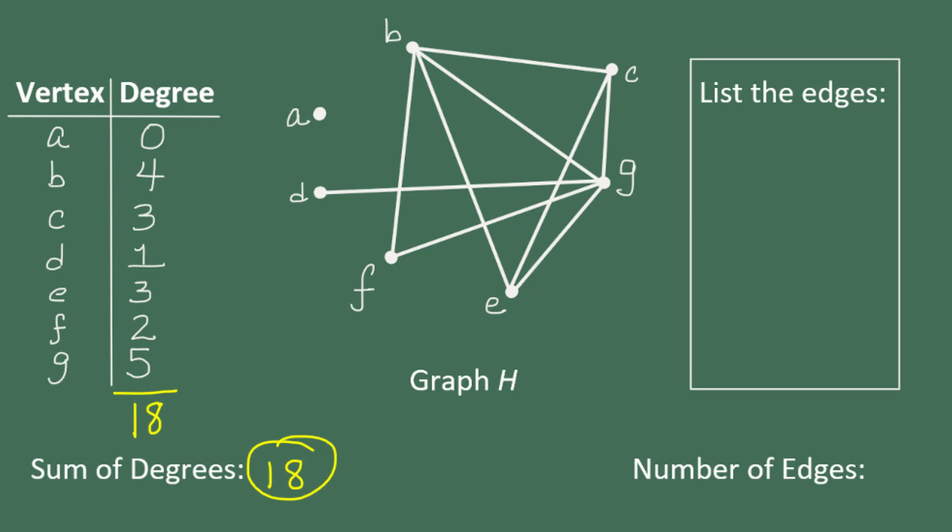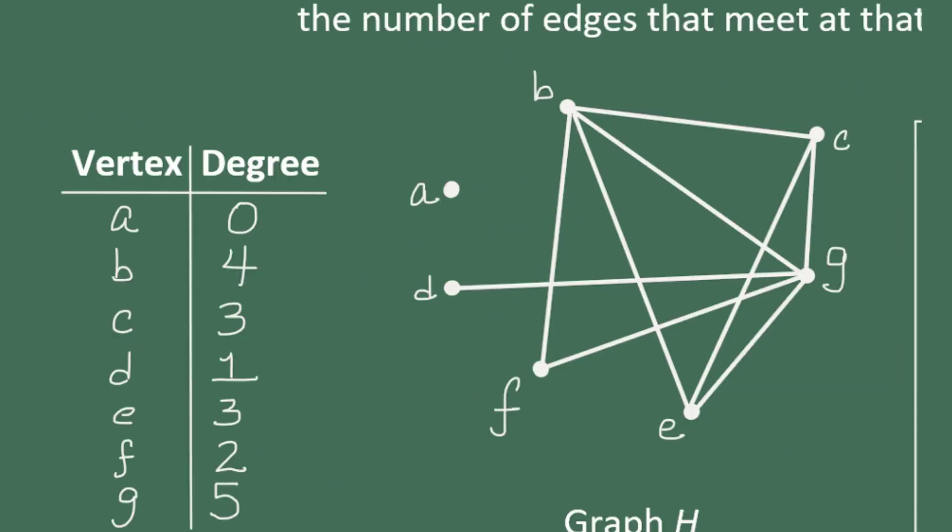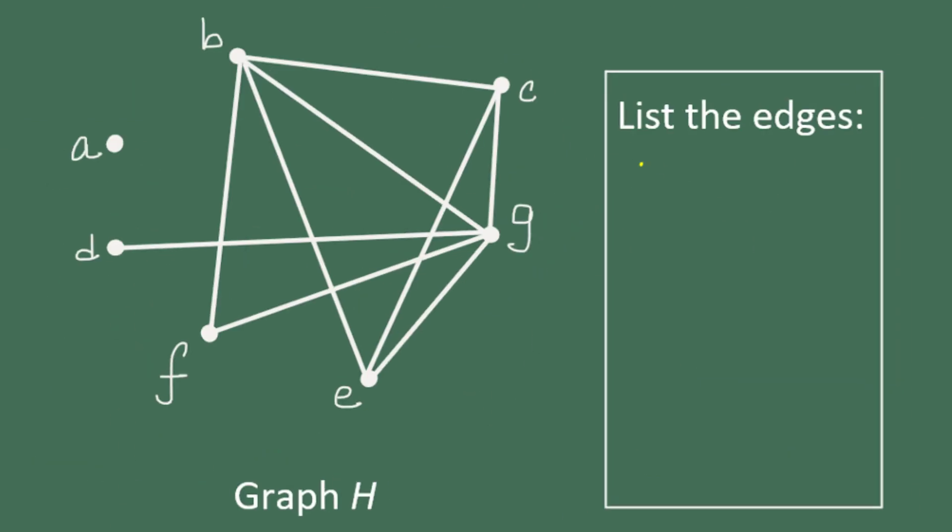So I'm going to start by listing each of the edges that relates to vertex A. Well, A isn't at the end of any edges, so there actually are no edges that have A as one of the vertices. So let's move on to B. So for B, we have B to C, so I'll list edge BC.